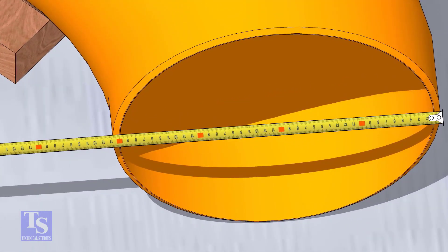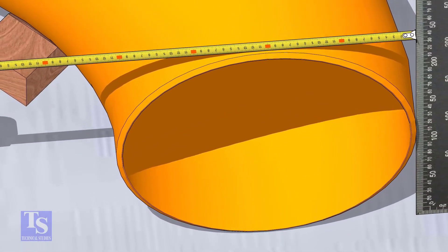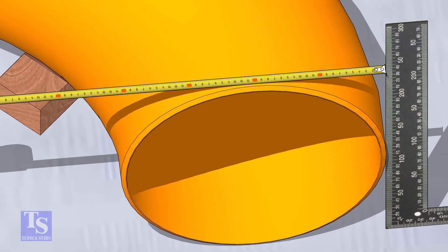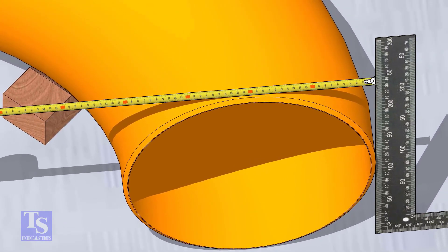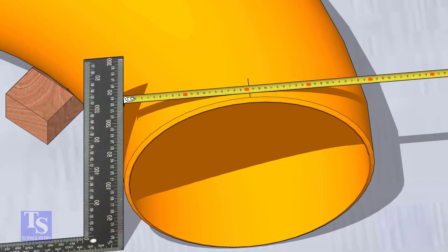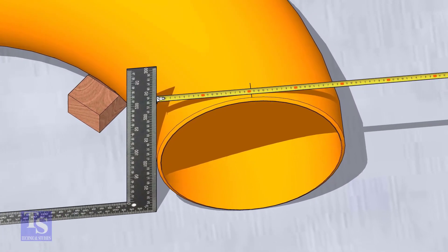Put a right angle at the side of the elbow, touching the side smoothly, and mark 203 millimeters on the top side of the elbow. Put the right angle on the opposite side and check if the marking is correct.